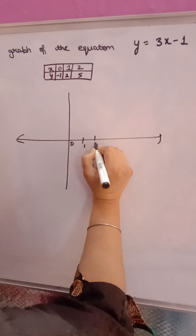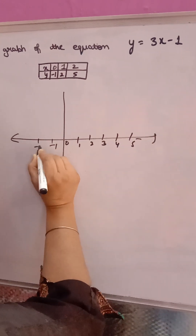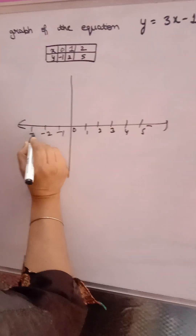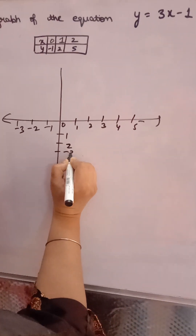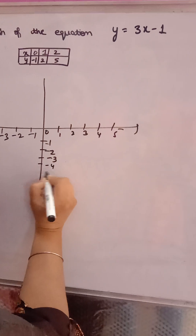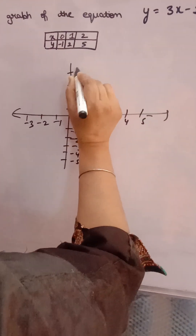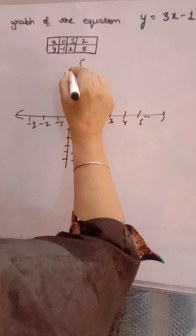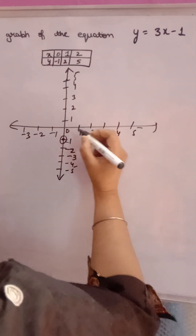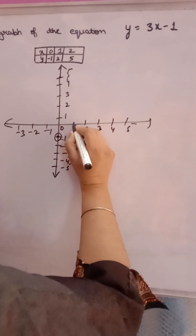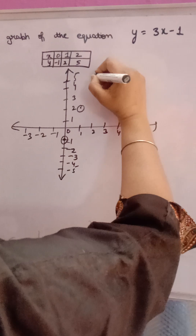On the graph, mark the axes: 0, 1, 2, 3, 4, 5 in positive, and minus 1, minus 2, minus 3, minus 4, minus 5 in negative. Now plot the points: when x is 0, y is minus 1 — one point comes here. When x is 1, y is 2 — one point comes here. When x is 2, y is 5.